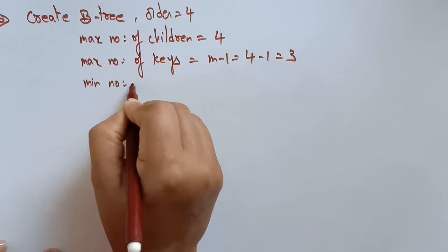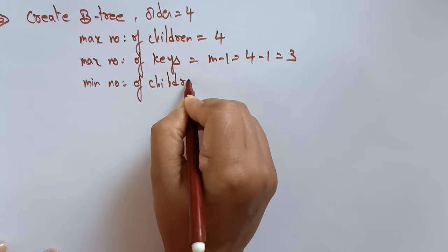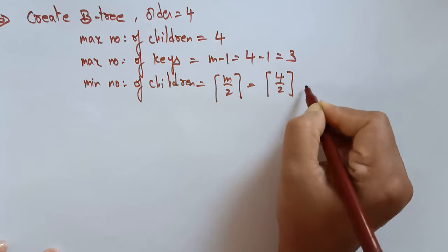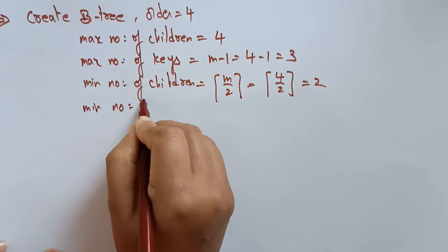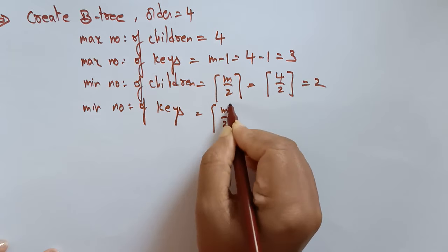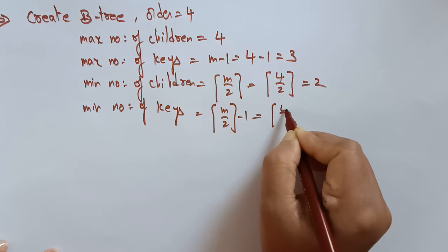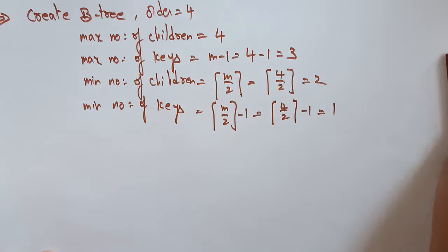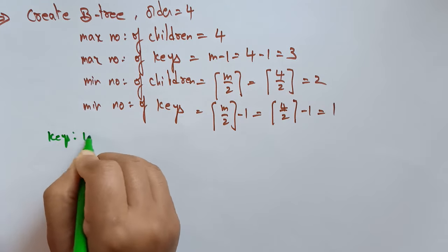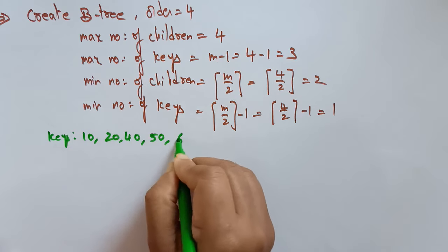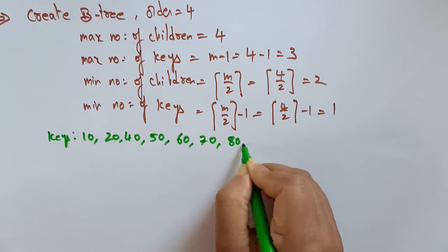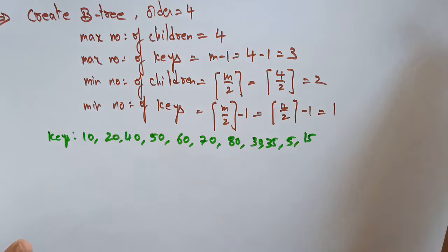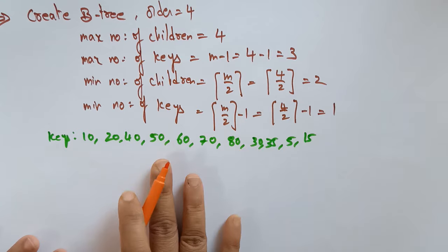The minimum number of children is the ceiling of m by 2, that is 4 by 2, which gives 2. And the minimum number of keys is m by 2 minus 1, that is 4 by 2 minus 1, giving 1. Now let's take the keys to insert: 10, 20, 40, 50, 60, 70, 80, 30, 35, 5, 15. Let's construct the B-tree of order 4.